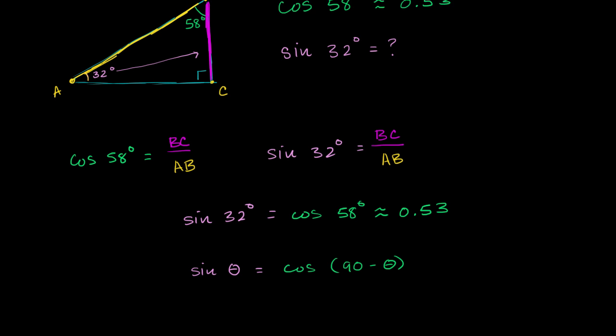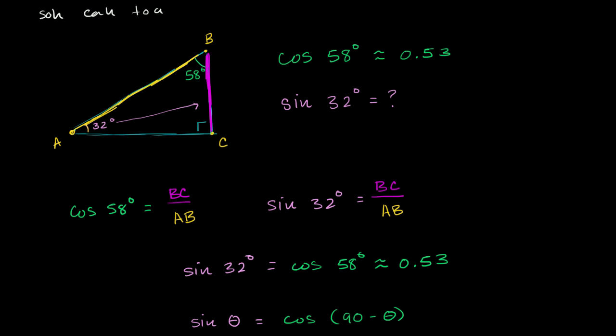I could change this entire problem. Instead of making this the sine of 32 degrees, I could make this the sine of 25 degrees. And if someone gave you the cosine of what's 90 minus 25, if someone gave you the cosine of 65 degrees, then you could think about this as 25. The complement is going to be right over here. This would be 65 degrees. And then you could use the exact same idea.